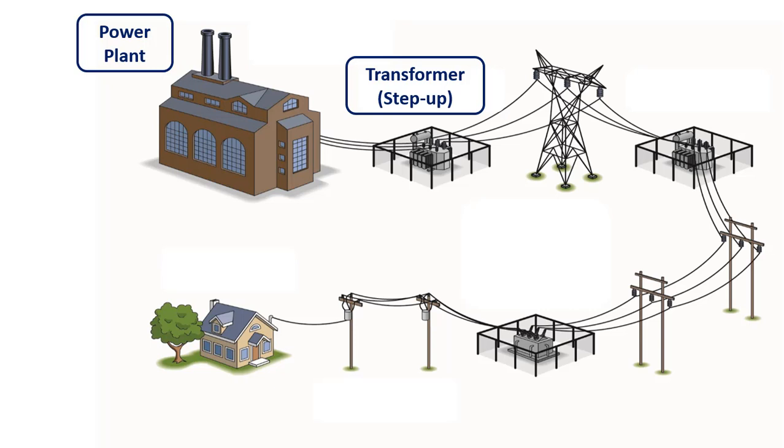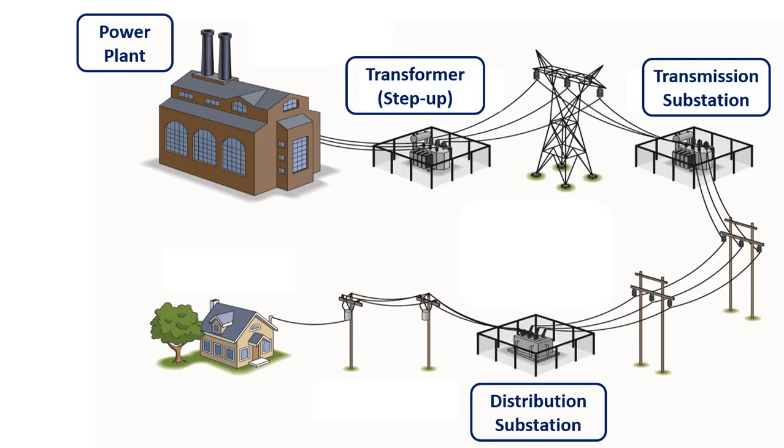Then, this high voltage is carried to the city entrances with transfer stations and big poles. High voltage is reduced with the help of transformers at the city entrances. Eventually, it reaches our homes as 110 volts AC.